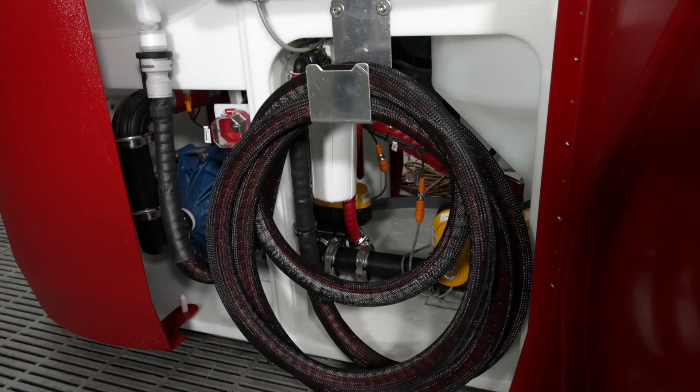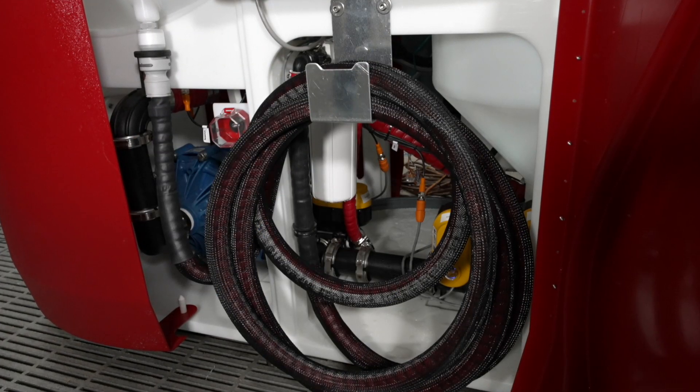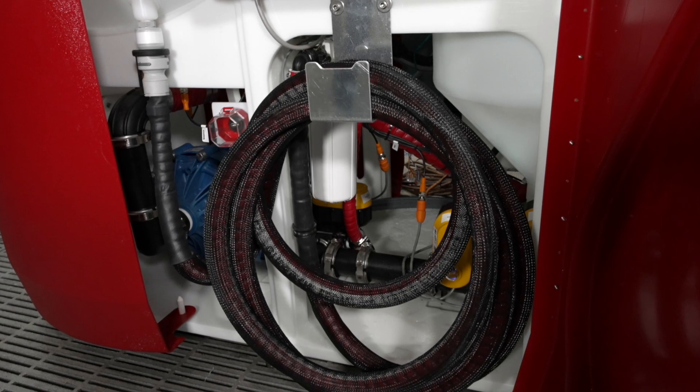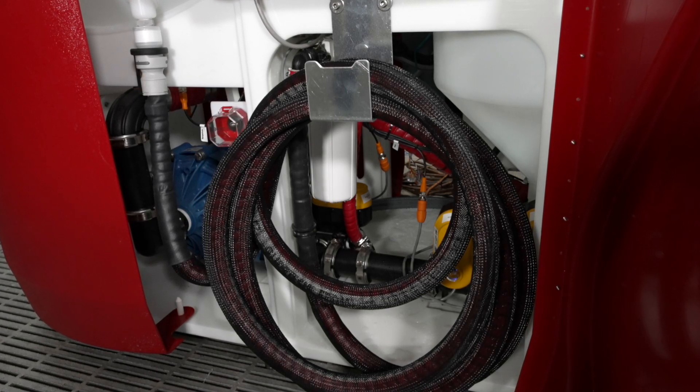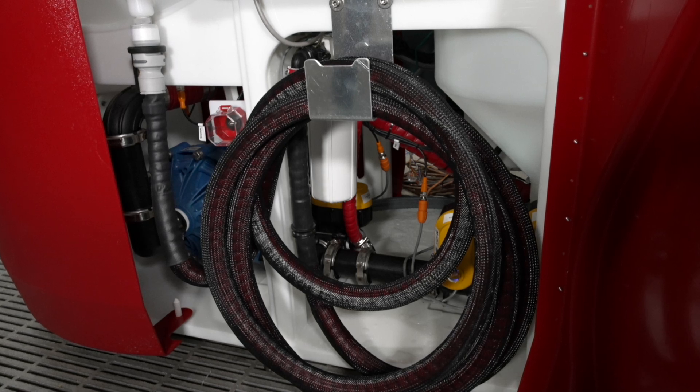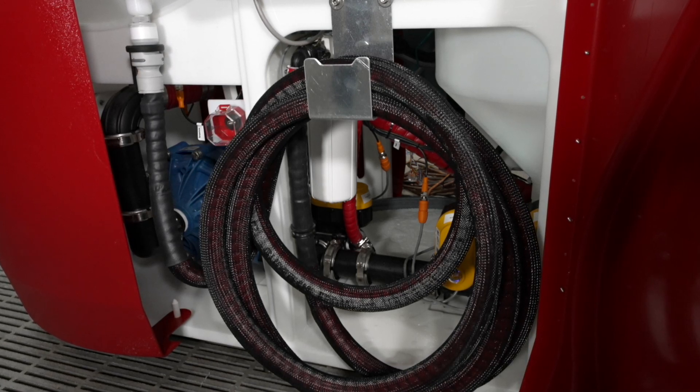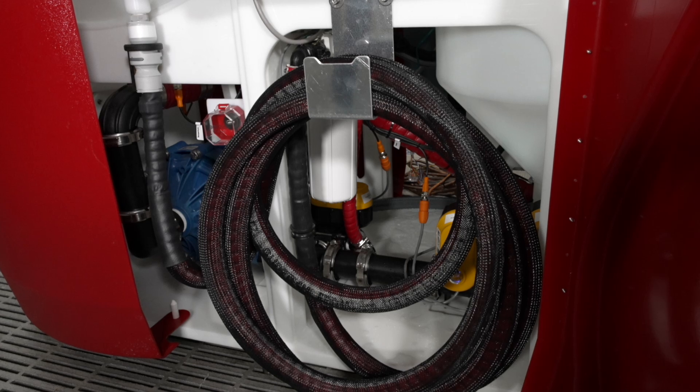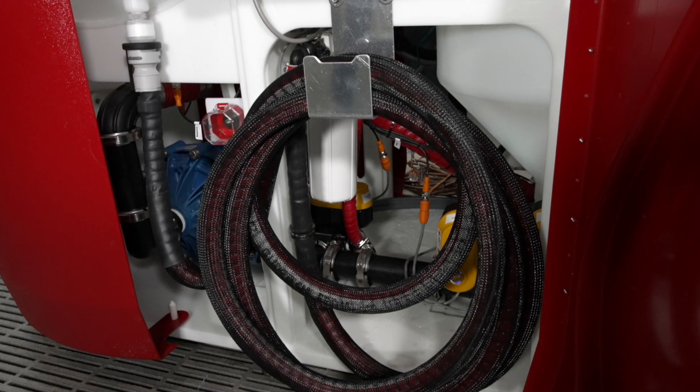Ensure that the external transfer hose located behind the access panel is connected to the Acumix prior to starting the batch and not to the storage tank. Acumix will not begin the batch cycle unless the transfer hose is attached in the proper position as shown here.